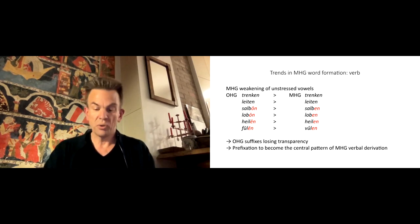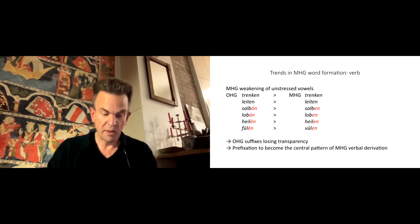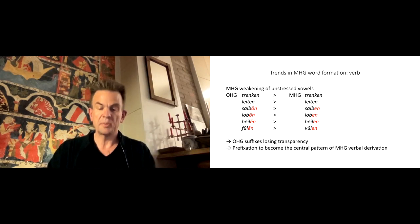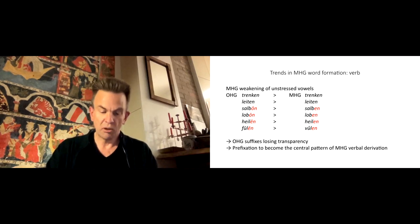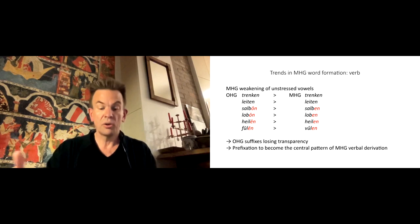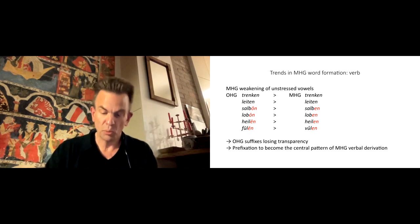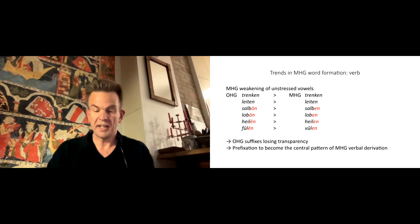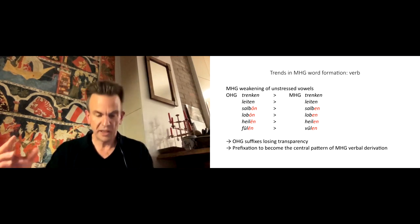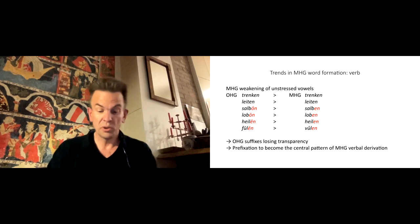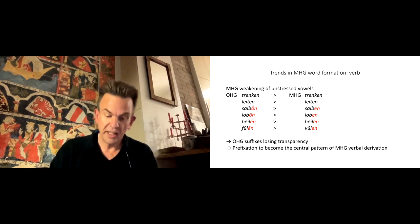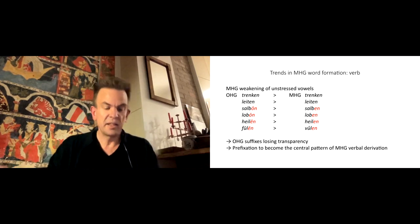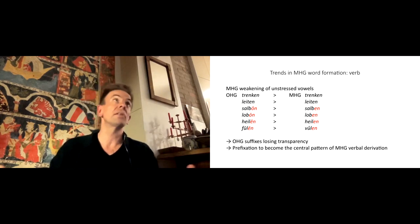A large number of -ôn verbs are ornatives. They modify the base noun by adding the concept to provide with. Old-High German salba ointment becomes salbôn to apply ointment, to anoint. Old-High German lob praise becomes lobôn to provide praise, to praise. Finally, a large number of -ên verbs are inchoatives. They modify an adjectival base by adding the concept of to become. Old-High German fûl, rotten, becomes fûlen, to become rotten, to rot. Heil, sane, becomes heilen, to become healed or to heal.